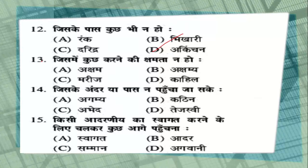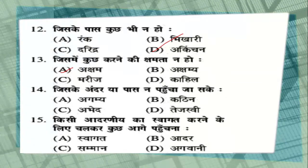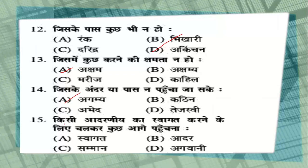Question number 13: जिसमें कुछ करने की क्षमता न हो — option A: अक्षम, option B: अक्षम्य, option C: मरीज, option D: काहिल. The correct answer is option A, अक्षम. Question number 14: जिसके अंदर या पास न पहुंचा जा सके — option A: अगम्य, option B: कठिन, option C: अभेद, option D: तेजस्वी. The correct answer is option A, अगम्य.